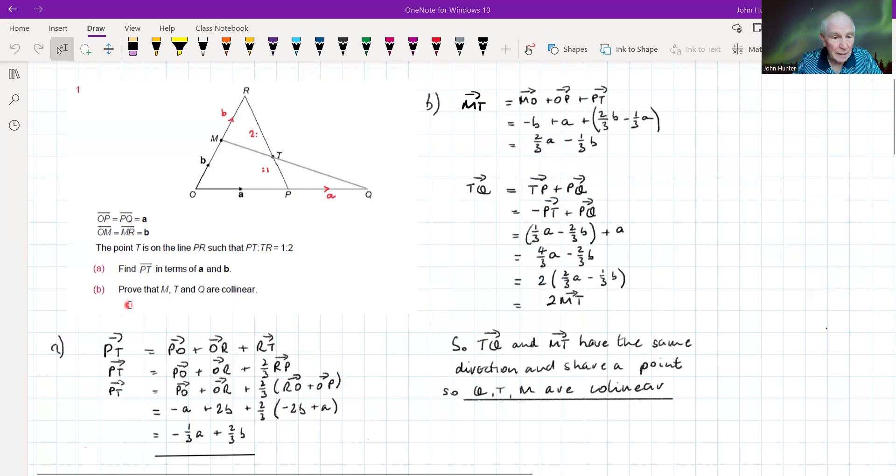And now this is quite a common form of question. Prove that M, T, and Q are collinear. So, right, so what we do, so we've got M, T, and Q. So I've drawn this line in here, and it certainly looks as if they're collinear. Basically, that means they are all on the same line. M, T, and Q, there we go.